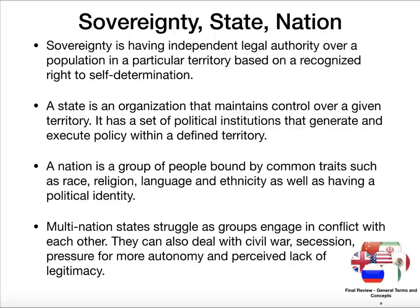Sovereignty, state, and nation. Sovereignty is when you have independence as a legal authority over a particular territory — it's based on your right to self-determination. A state is an organization that has control over a given territory; there's a political foundation, policies, and it's a defined territory. A nation is a group of people with common traits such as race, religion, language, and ethnicity. You will sometimes see a multi-nation state — a state with multiple nationalities — and sometimes that's a problem: it can lead to civil war, one group wanting to secede, and a lack of legitimacy for the government.